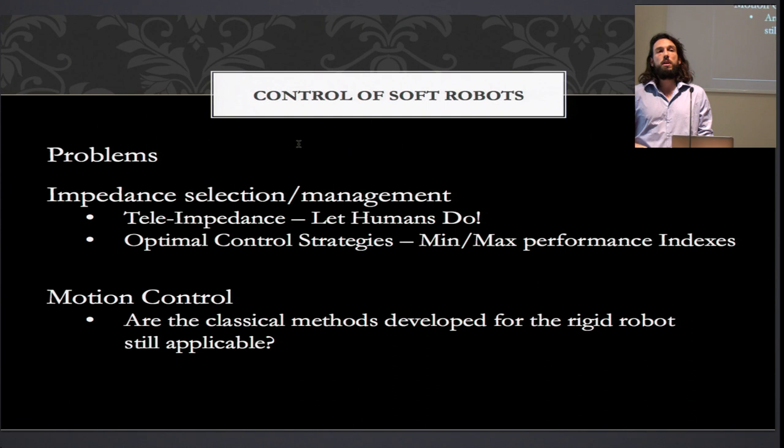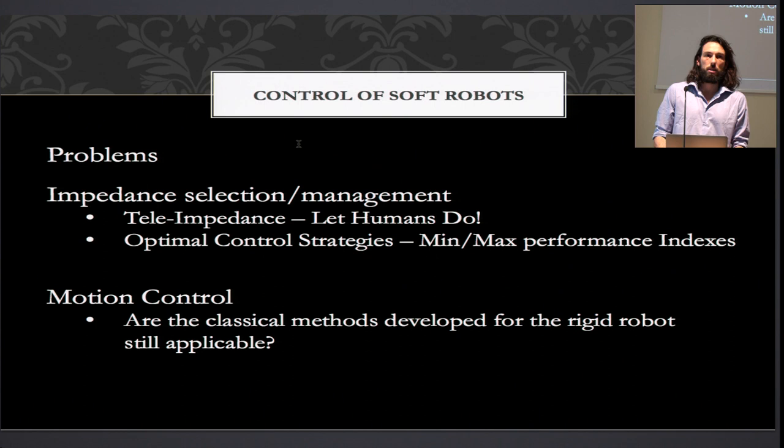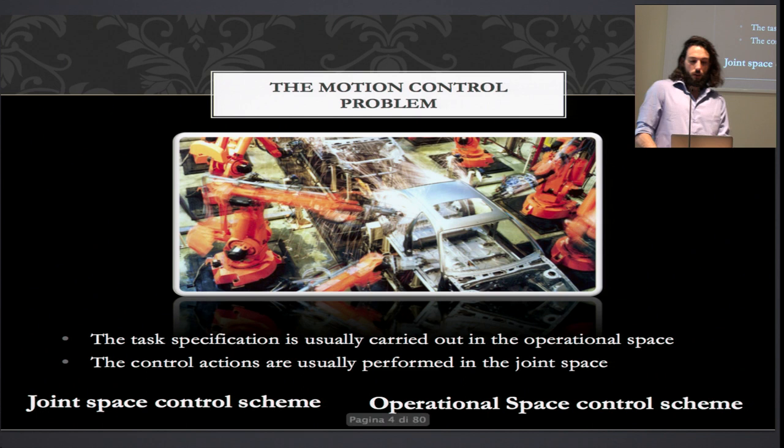If you want to move a soft manipulator from point A to point B, which kind of algorithm are we going to use? From the point of view of a lazy student — which is what I was — are the old classical algorithms developed for rigid robots still usable, still useful? So first let's have a look at the problem of controlling the motion of a rigid robot, and then we will see under which hypothesis the classical control algorithms are useful for controlling soft robots and variable stiffness actuators.